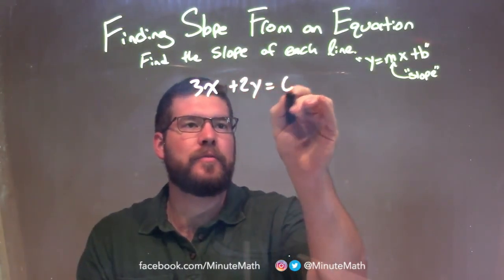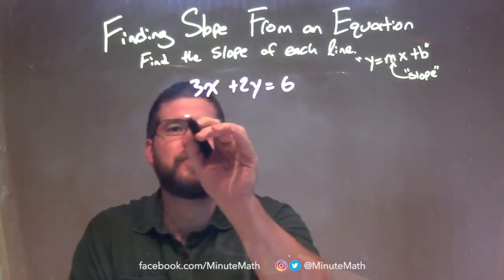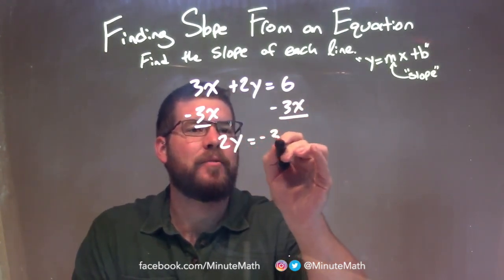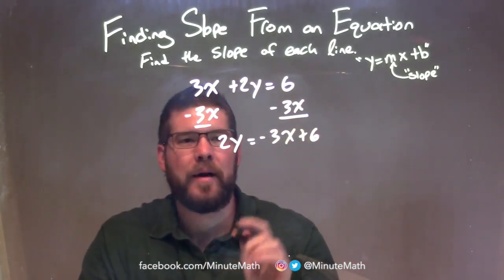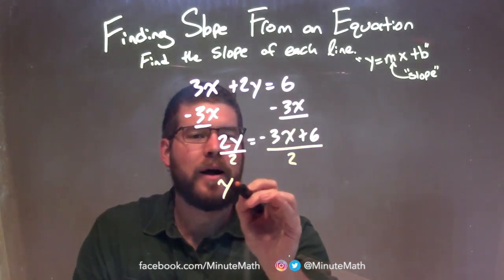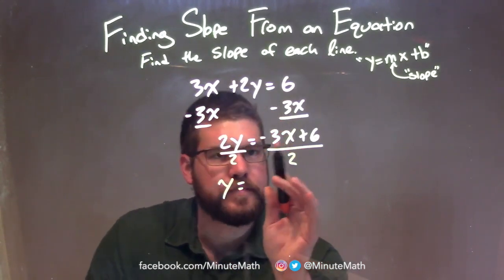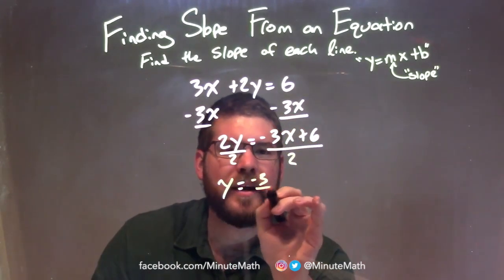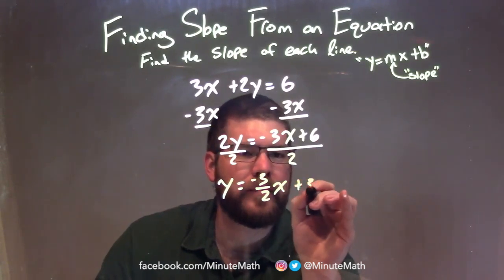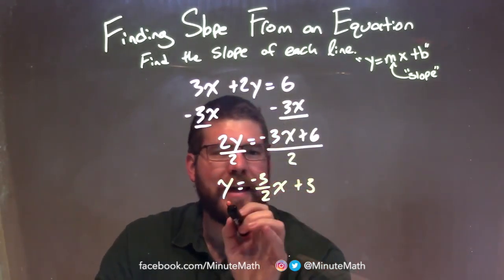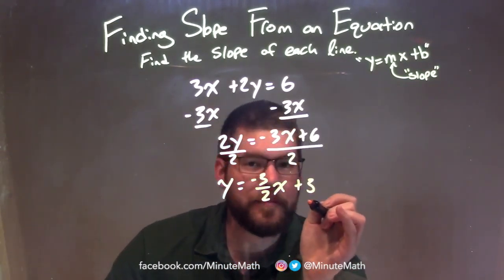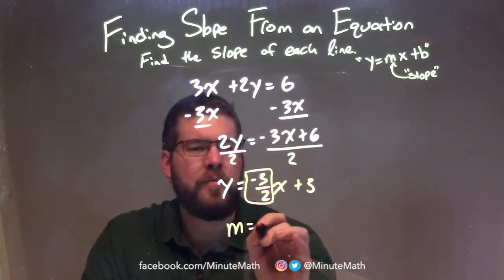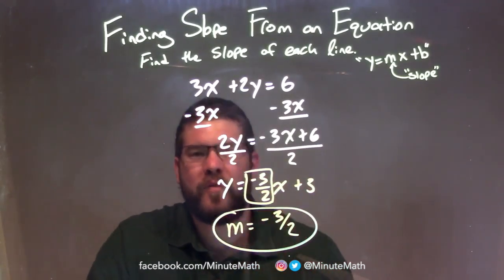3x plus 2y equals 6. I need to isolate y, so I subtract 3x from both sides. That gives me 2y equals negative 3x plus 6 on the right. Then to get y by itself, I divide both sides by 2. I need to distribute that 2 to both parts: negative 3x divided by 2 is negative 3 halves x, and 6 divided by 2 is 3. So y equals negative 3 halves x plus 3 — now in slope-intercept form, y equals mx plus b. I need to find my m value, the coefficient in front of x. Our m value is negative 3 halves. That is our final answer, our final slope.